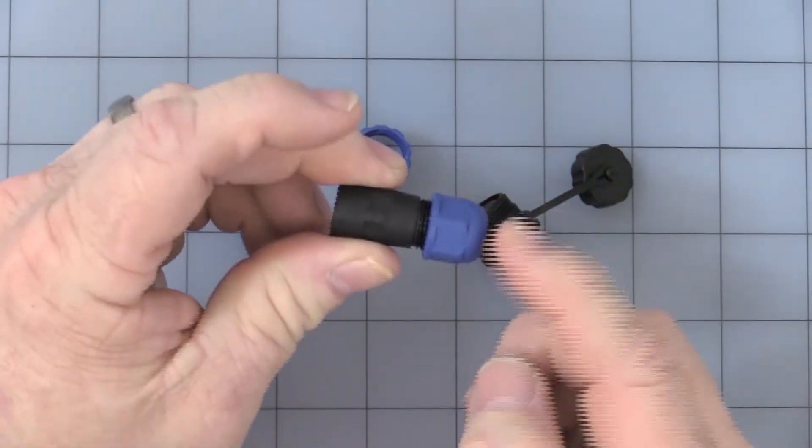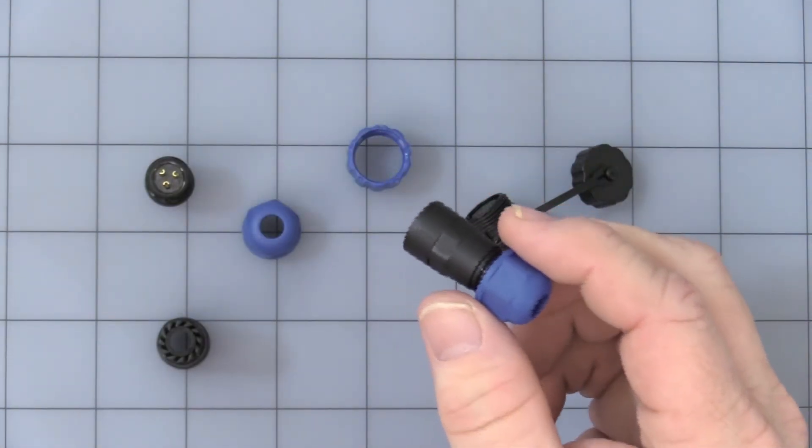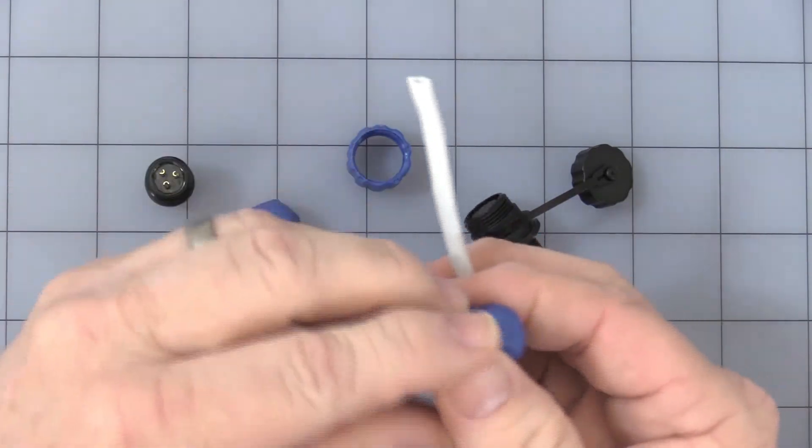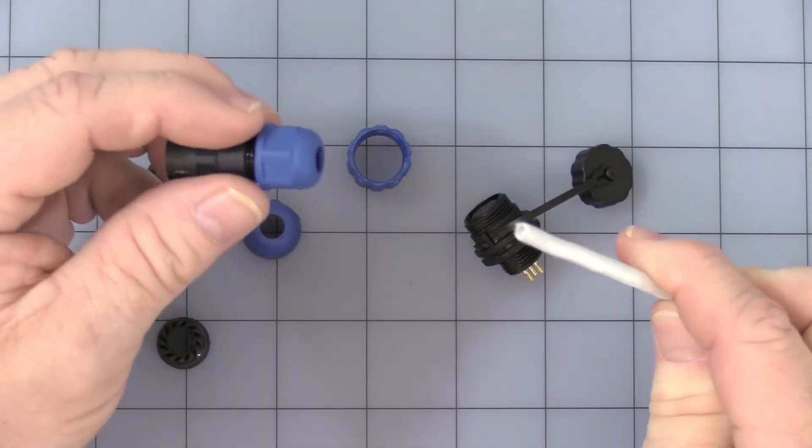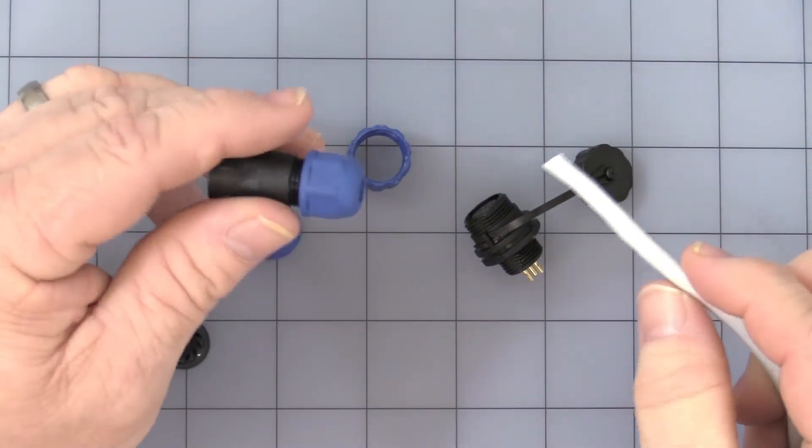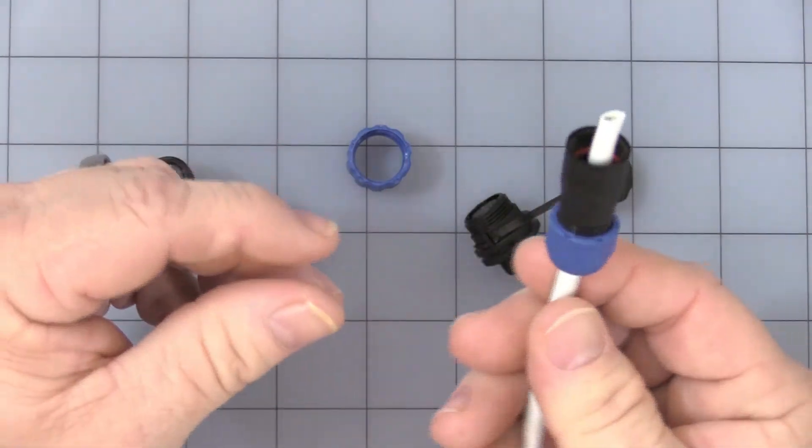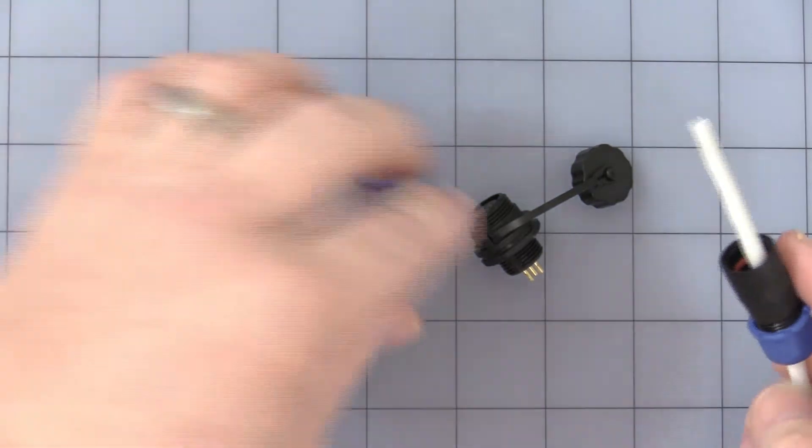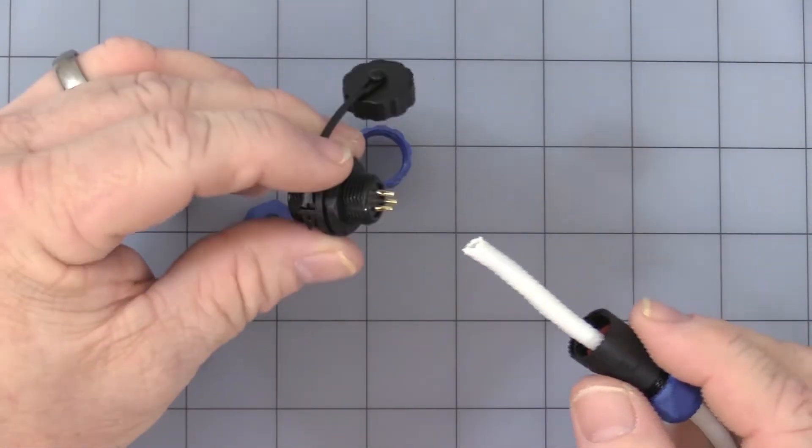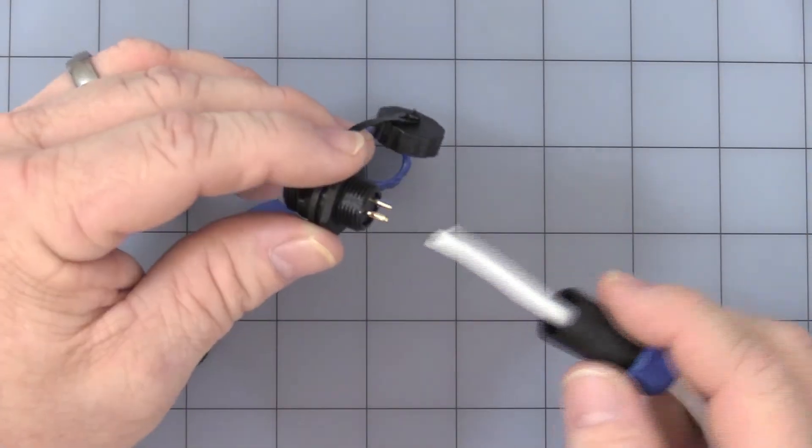To start with, don't tighten it all the way down because you have to use a round cable. This will not work with a flat or a zip cord. If you tighten it too much, you won't be able to get that in there. So you can slide it onto the unit. I'll save you the time of soldering this up to the connections.